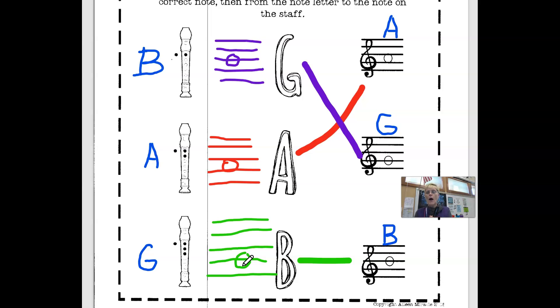You should already know how to read note names, so you should know what a B is and an A and a G is. A B, if you look, is right in the middle of the whole staff. These are five lines called the staff, and the B is right dead center in the middle.